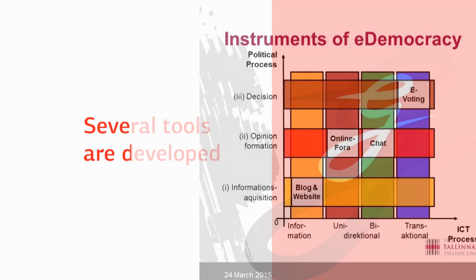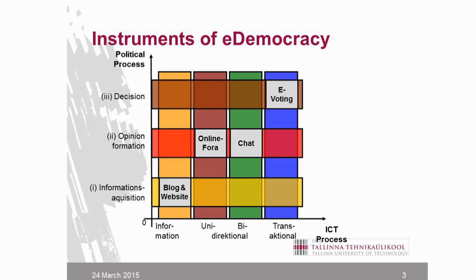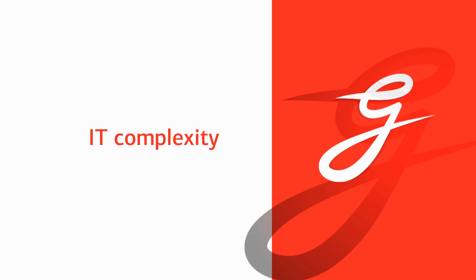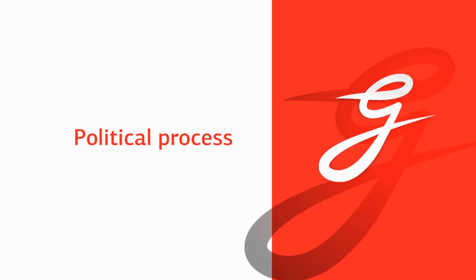Over time, we have developed several kinds of tools that can be categorized according to two dimensions. On the one hand, IT complexity — ranging from a very simple technical process of providing information, to a communication process that can be either unidirectional or bidirectional, to a transactional process where things are actually changed in databases. On the other hand, we have the political process dimension, which is similarly structured: gathering information, discussing, and last but not least, actually making a decision.